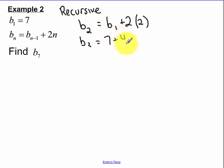Okay, now this is a recursive where I have to use the previous term. So my second term, I use my first term plus twice what N was, which is 2. So B sub 2 is equal to my previous term, which is 7, plus 4, which is 11.